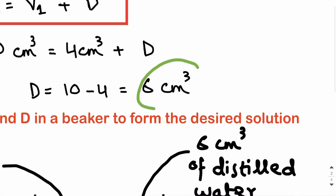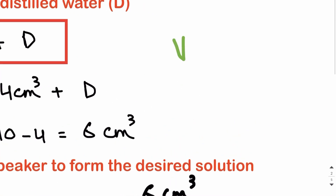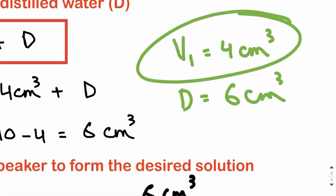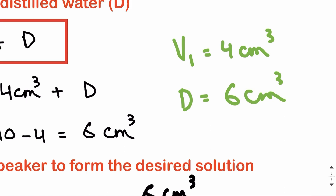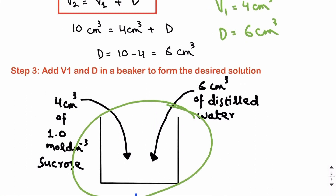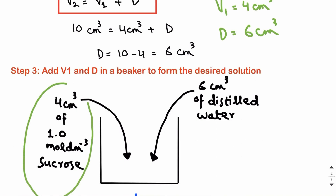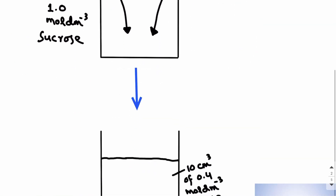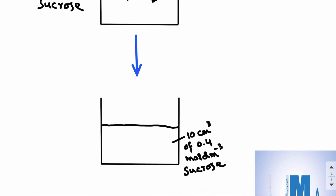So V1 is 4 cm³ of the stock solution and D is 6 cm³ of distilled water. If you add 4 cm³ of 1.0 mole per dm³ sucrose stock solution and 6 cm³ of distilled water into a beaker, you will get 10 cm³ of your desired solution at 0.4 mole per dm³ sucrose. This is how you carry out simple dilution.